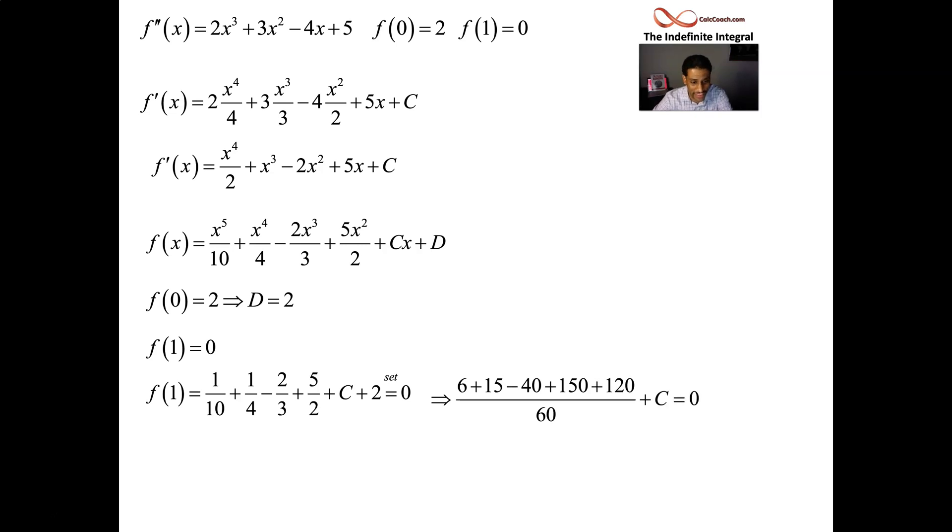Common denominator. 60. Everyone over 60. 6 on the top and bottom of the first one. 15 on top and bottom of the second one. 20 on top and bottom of the third one. 30 on top and bottom of the fourth one there. Plus the c should be equal to.